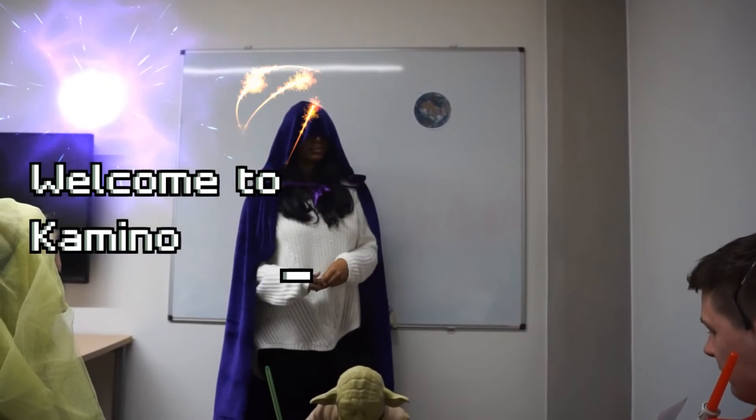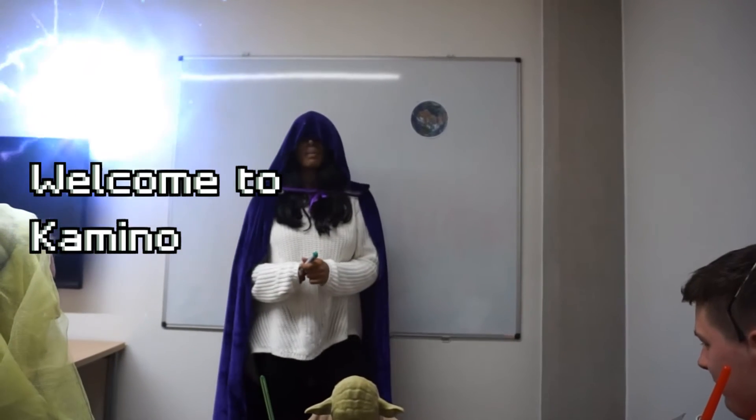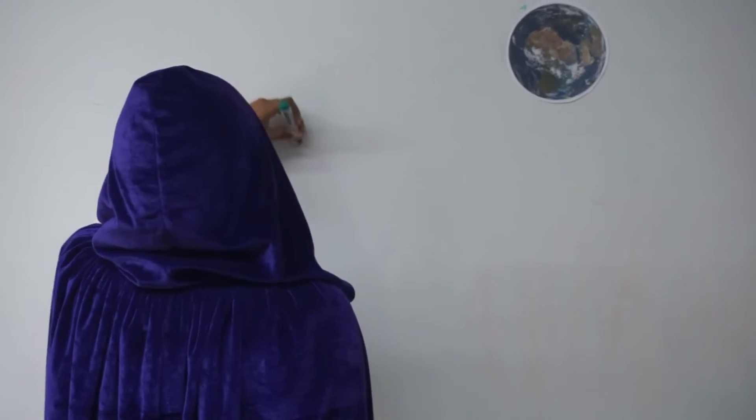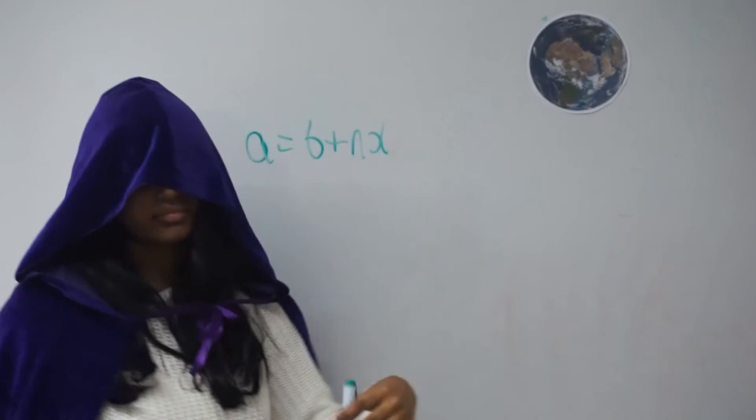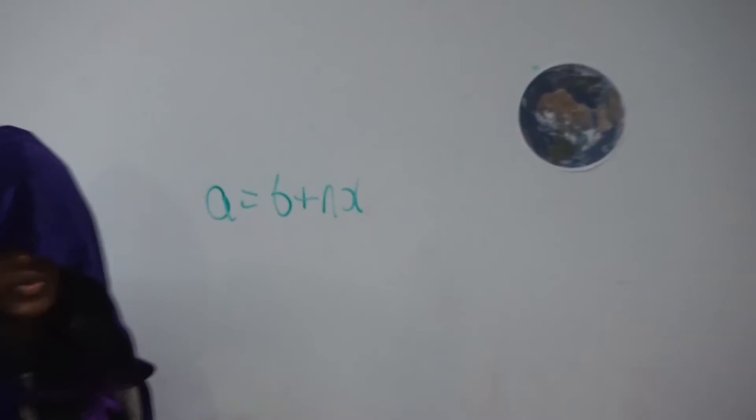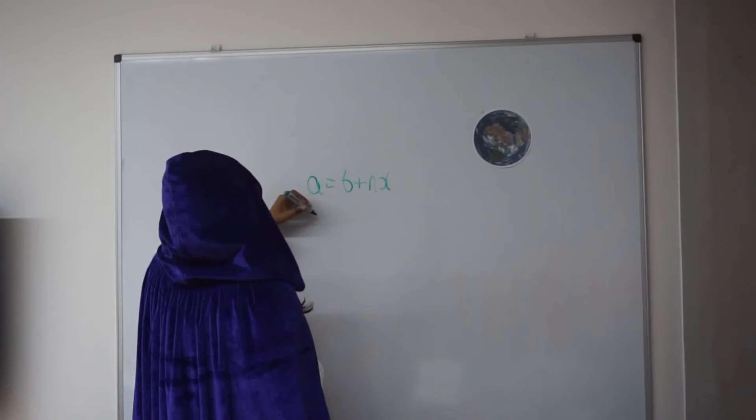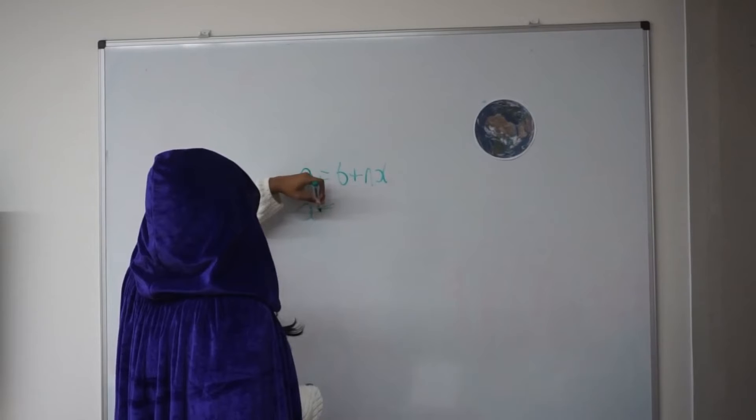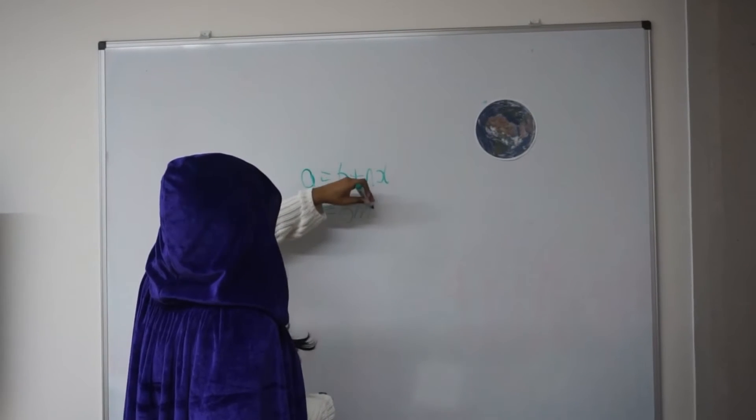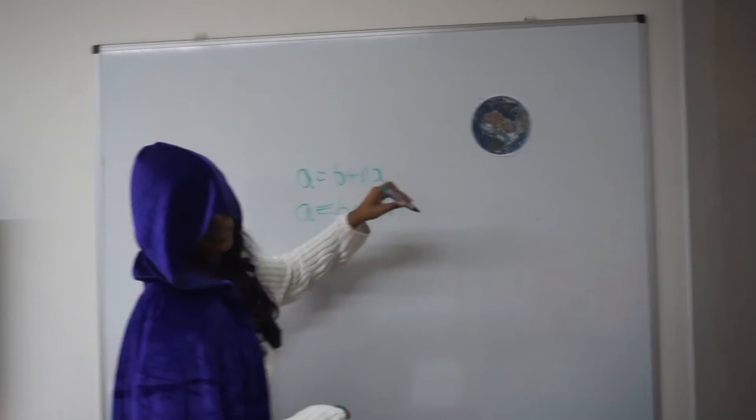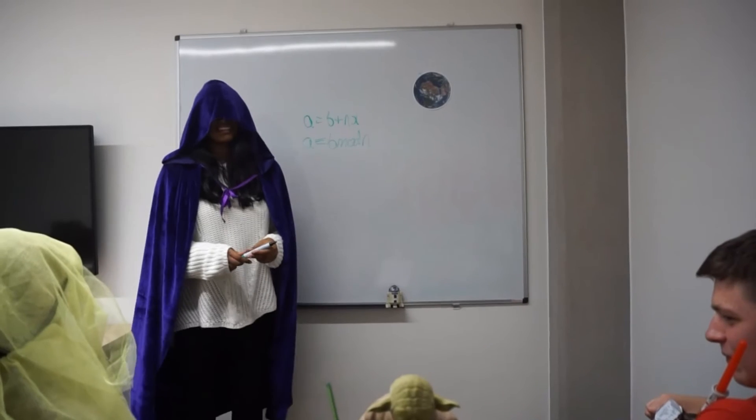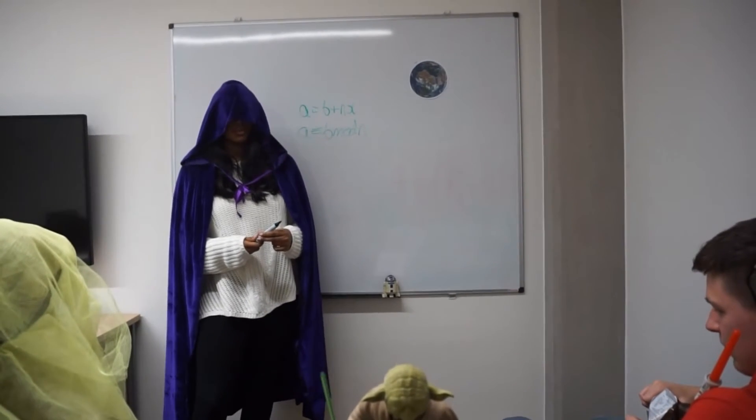We're going to give you a brief introduction. Imagine I have 4 integers, so that a is equal to b plus nx. Now, using some notation from Earth, we can also write this as a is congruent to b modulo n. This means that a is b more than a multiple of n.